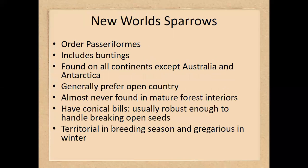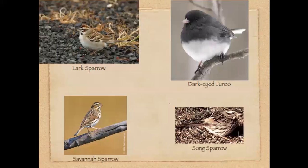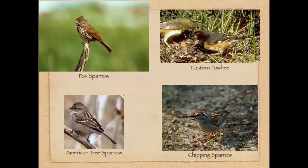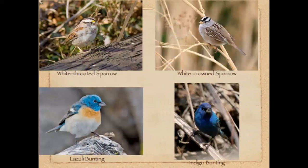The new world sparrows include most of our common sparrows, with the exception of the house sparrow, which is an old world sparrow. Sparrows are found on all continents except Australia and Antarctica. They have conical beaks and are gregarious in winter groupings but territorial during breeding season. This group includes the lark sparrow, dark-eyed junco, song sparrow, fox sparrow, eastern towhee, American tree sparrow, chipping sparrow, indigo and lazuli buntings, and the white-throated and white-crowned sparrows.